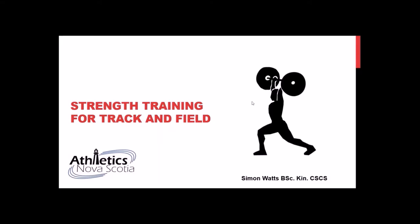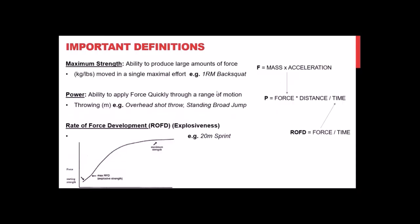First I want to go over some important definitions — a little bit of a physics class refresher. Maximum strength is the ability to apply a large amount of force, measured in kilograms or pounds, in a single maximal effort. An example would be a one-repetition max back squat — the largest load you can move for one all-out effort.